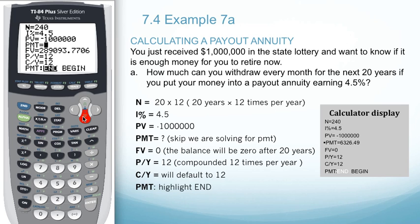The future value, in this case, will be zero after the 20 years. The payments per year and compounding periods per year will be 12, which in this case we don't need to change.